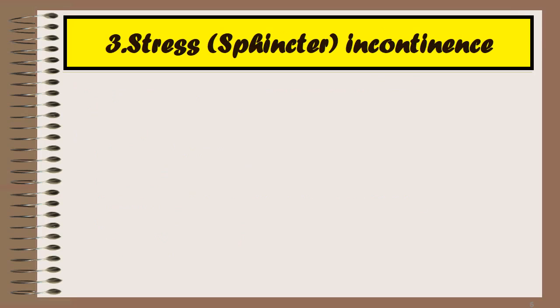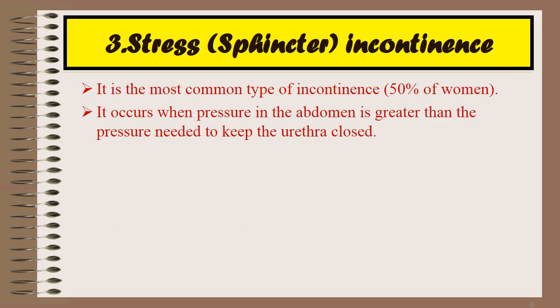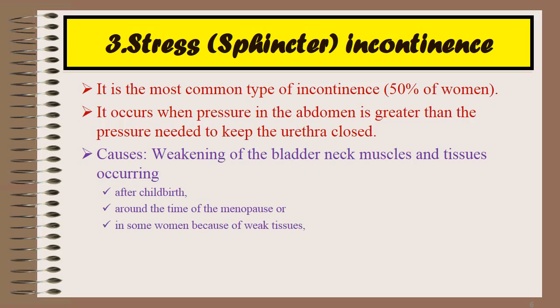Stress incontinence is also known as sphincter incontinence and is the most common type of incontinence, seen in 50% of women. It occurs when pressure in the abdomen is greater than the pressure needed to keep the urethra closed. Causes include weakening of bladder neck muscles and tissues occurring after childbirth, around the time of menopause, or in some women due to weak tissues.